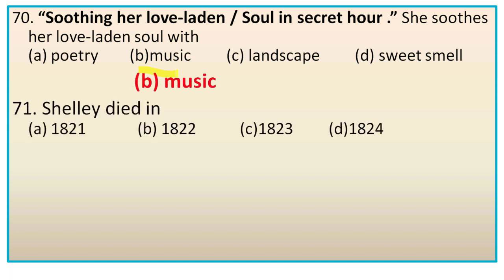Question 71: Shelley died in — we know the lifespan of Shelley. He was born in 1792 and died at the early age of 30 in 1822. So the lifespan is 1792 to 1822. The right option is B, 1822. Shelley died in 1822.